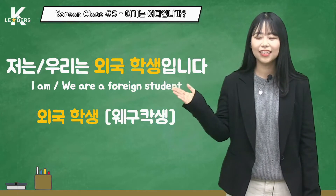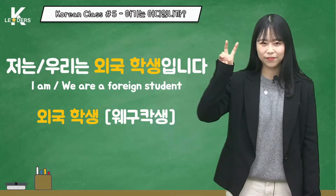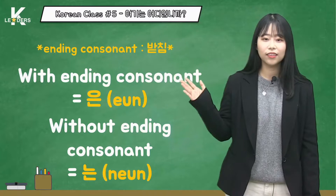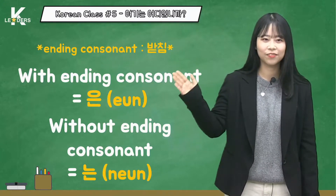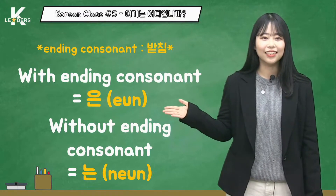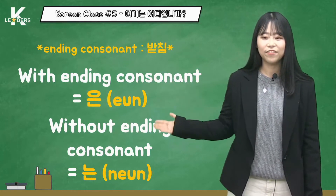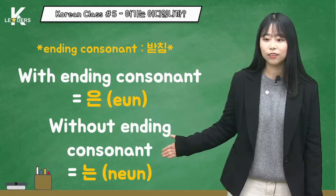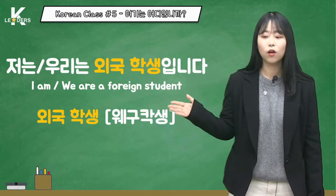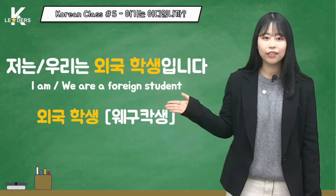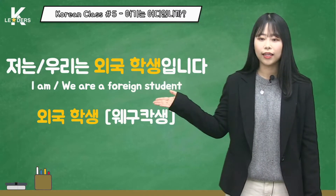There are four kinds of subject markers in Korean. Today I will explain two of them. We will call the ending consonant 받침. According to 받침: if the preceding word has a 받침, use 은. If the preceding word does not have a 받침, use 는. 외국 means 'foreign country,' 학생 means 'student,' 입니다 means the 'be' verb. So the sentence means 'I am a foreign student.'